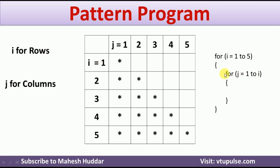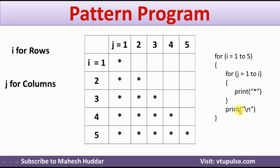If the value of i is 1, j goes from 1 to 1. If i is equal to 2, j goes from 1 to 2. If i is equal to 5, j goes from 1 to 5. In every such condition, we need to print a star. After every inner loop, we need to add one newline character. This is the programming construct to display this star pattern.